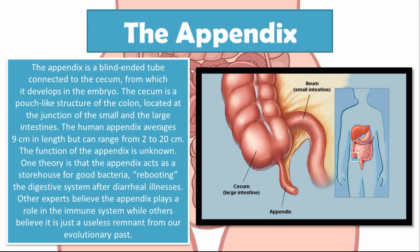Before we get into the specifics of what appendicitis is, let's do a quick review on the appendix. The appendix is a blind-ended tube connected to the cecum, from which it develops in the embryo. The cecum is a pouch-like structure of the colon located at the junction of the small and large intestines. The human appendix averages about 9 cm in length but can range from 2 to 20 cm. The function of the appendix is unknown. One theory is that the appendix acts as a storehouse for good bacteria, rebooting the digestive system after diarrheal illnesses. Other experts believe the appendix plays a role in the immune system, while others believe it is just a useless remnant from our evolutionary past.